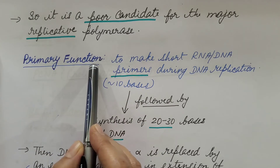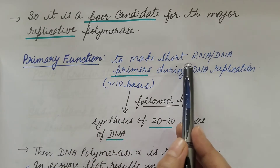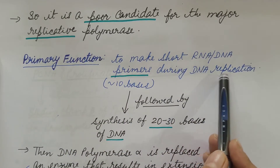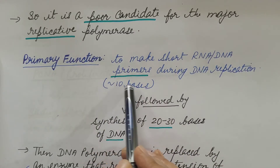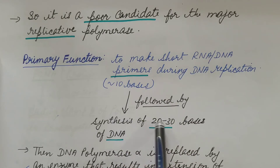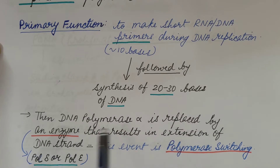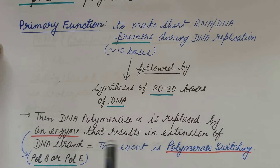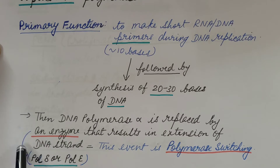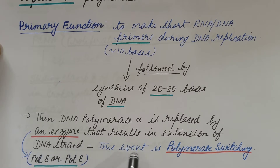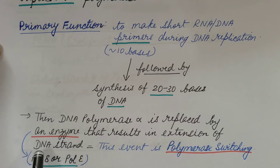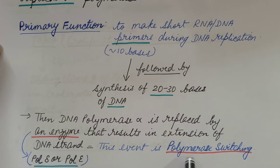The primary function it performs is to make short RNA-DNA primers during DNA replication, approximately 10 bases, followed by synthesis of 20-30 bases of DNA. Then DNA polymerase alpha is replaced by an enzyme that results in extension of the DNA strand — polymerase delta or polymerase epsilon. This event in which DNA polymerase alpha is replaced by the major replicative enzyme, DNA polymerase delta or DNA polymerase epsilon, is known as polymerase switching.